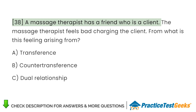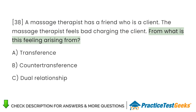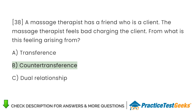A massage therapist has a friend who is a client. The massage therapist feels bad charging the client. From what is this feeling arising? A. Transference. B. Countertransference. C. Dual relationship.